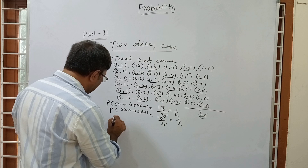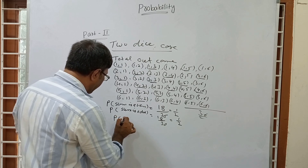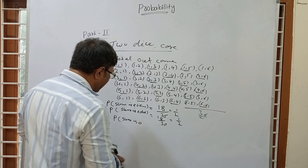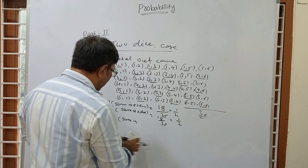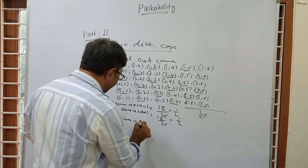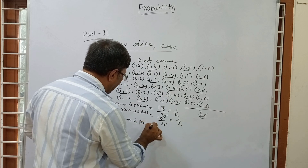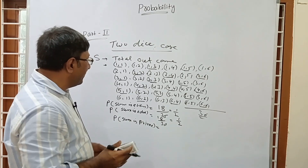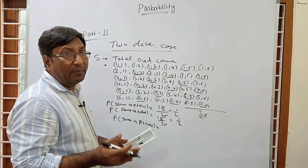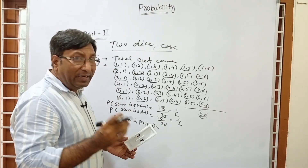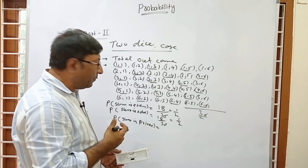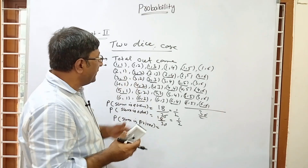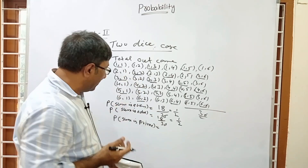In the same way, we can find the probability that the sum is prime. For prime numbers — those divisible only by 1 and themselves — we now want to find how many of the 36 pairs have a prime sum. So we go through each pair and check.